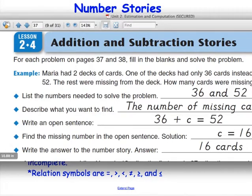Our next job is to find the missing number in the open sentence. That's our solution. Your solution means what does that variable stand for? In this case, if we do this math, C equals 16. We would put the number 16 in place of C, and it would be a true number sentence. So the solution is C equals 16.